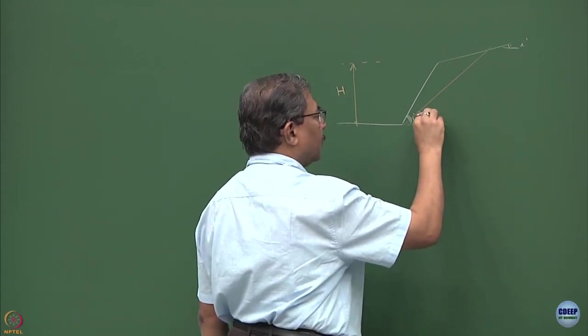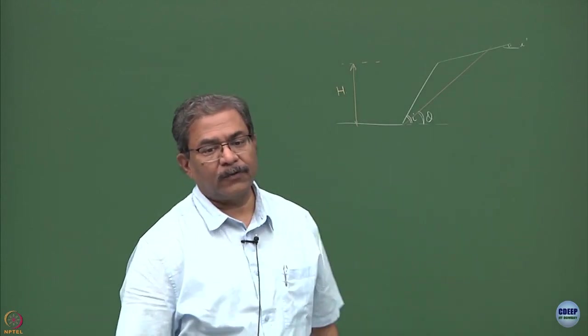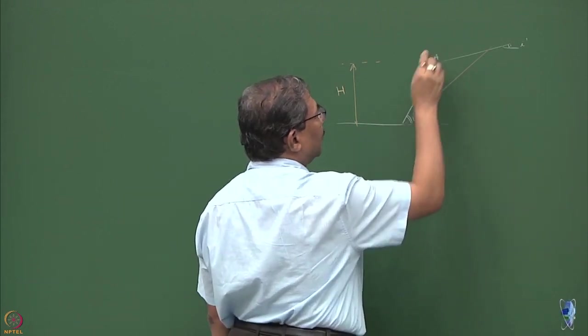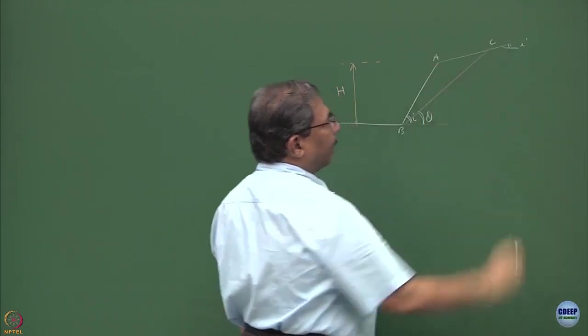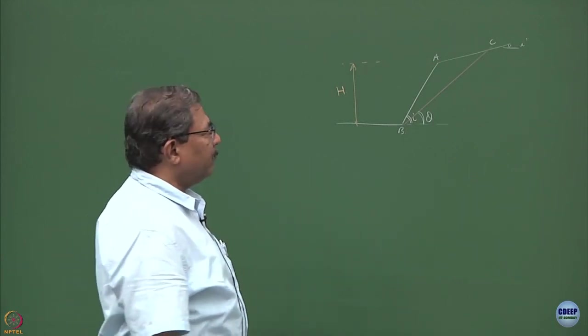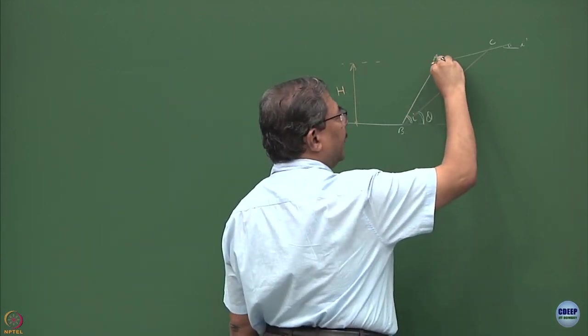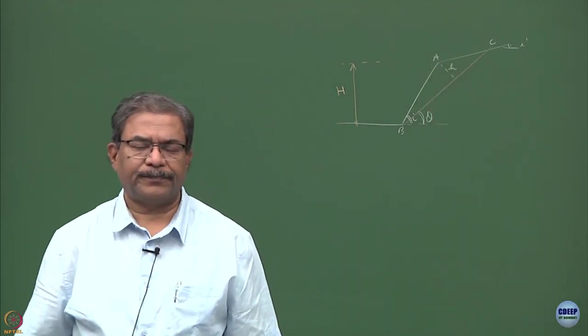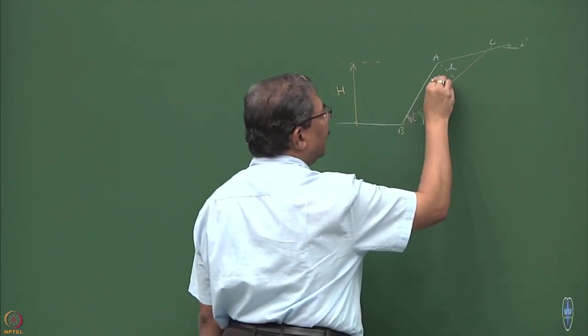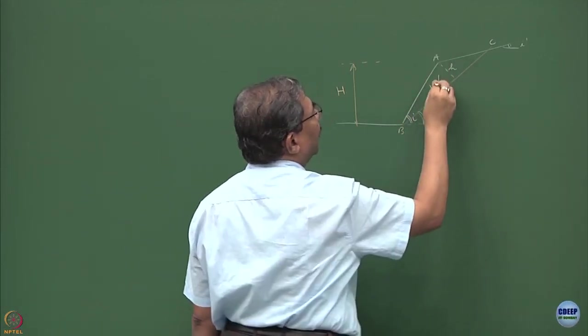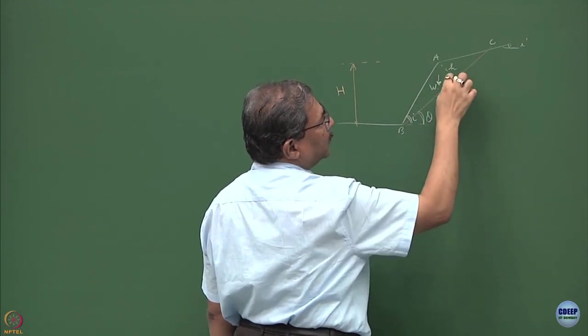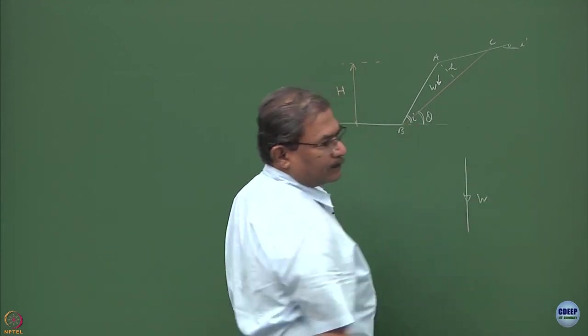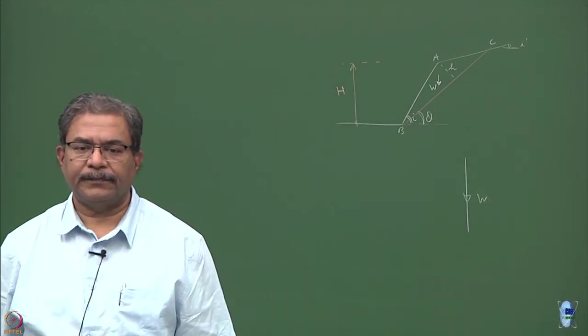Now my question to you would be draw the free body diagram of the forces which are going to act on this. The easiest possible way would be drop a perpendicular from A and designate this as h. Now you can compute W1 easily, W2 can also be computed. So basically I am writing this as W, so W is known.